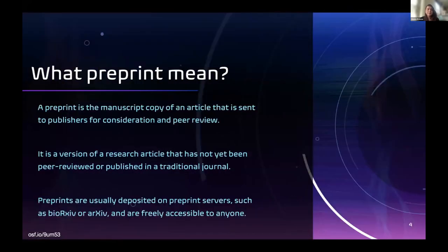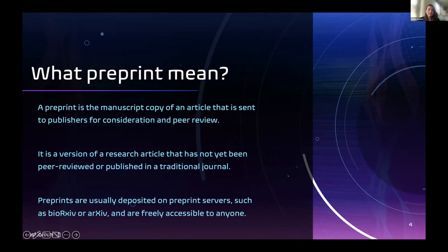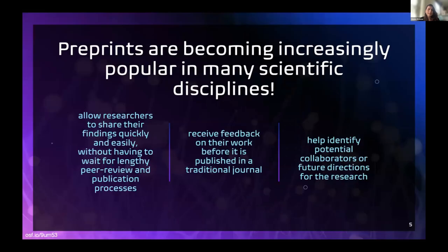A preprint is the manuscript copy of an article that is sent to publishers for consideration and peer review — a version of a research article that has not yet been peer reviewed or published in a traditional journal. They generally have their own repositories to publish in, and two examples are included here. They are freely accessible to anyone. Preprints are becoming increasingly popular in many scientific disciplines, allowing researchers to share findings quickly without waiting for lengthy peer review and publication processes. They also promote receiving feedback before traditional publication and help identify potential collaborators for future research directions.